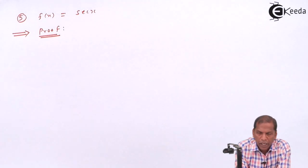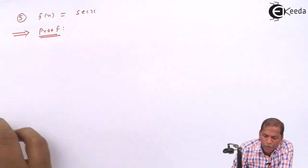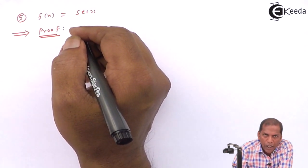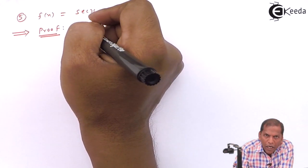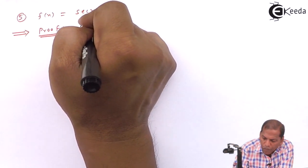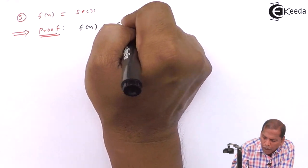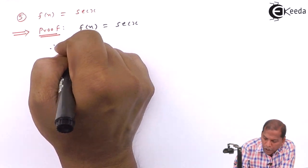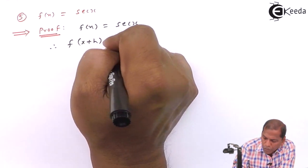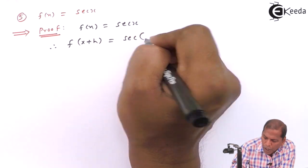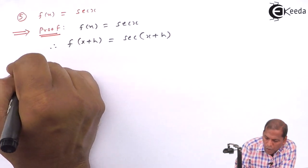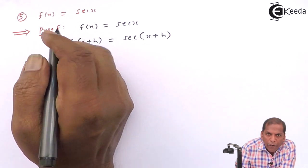Hello friends. Now we see the derivative of trigonometric function with proof. Number five is f(x) is equal to sec(x). Now let's see the proof. So first we start with f(x) is equal to sec(x), therefore the next step is f(x + h) is equal to sec(x + h). Then by first principle of derivative,